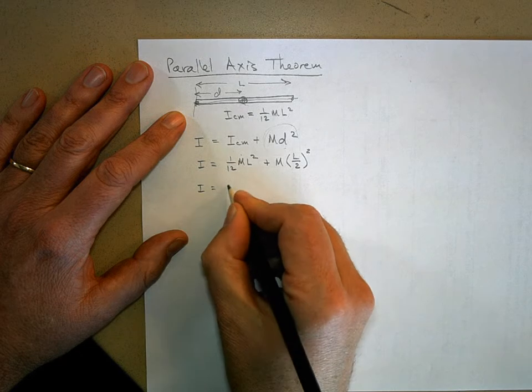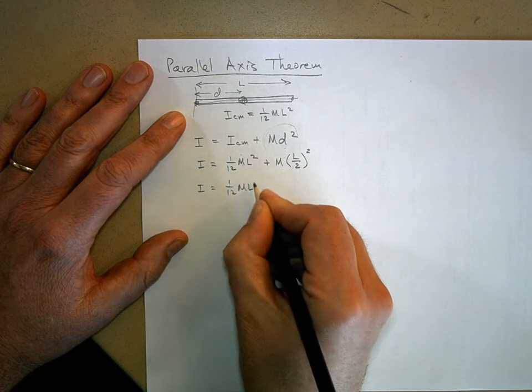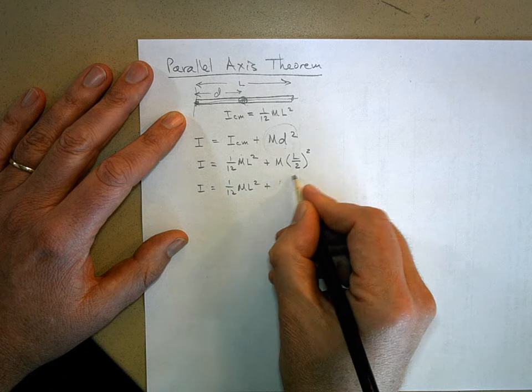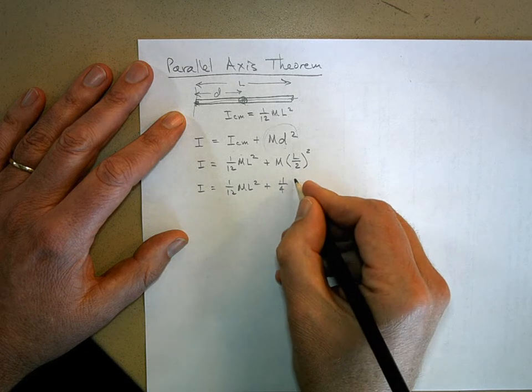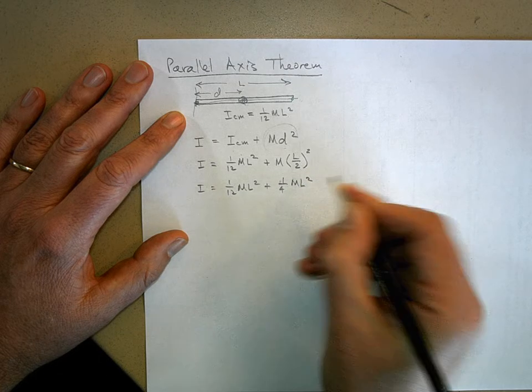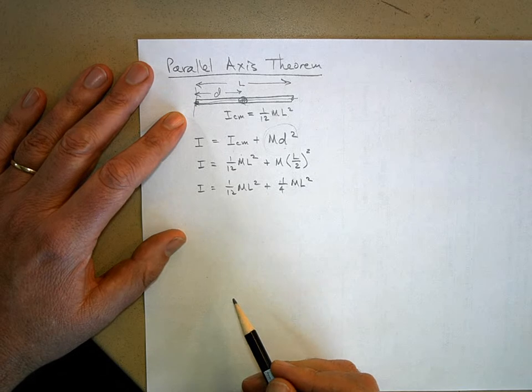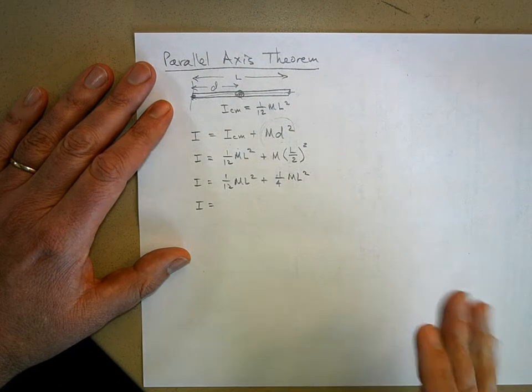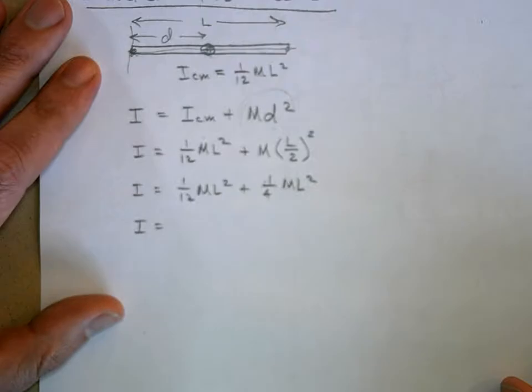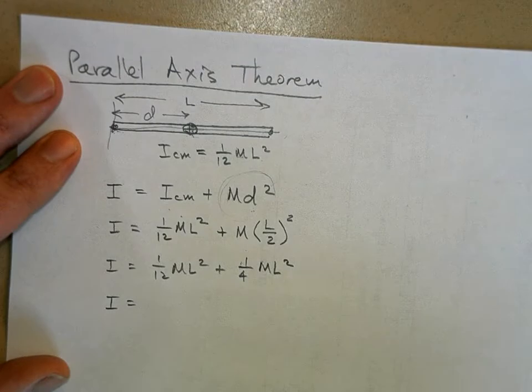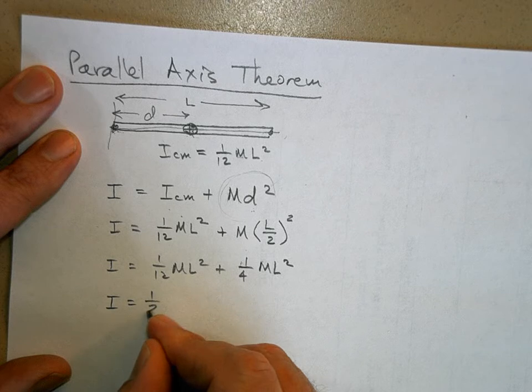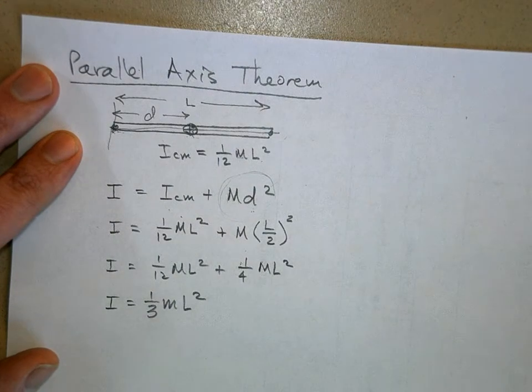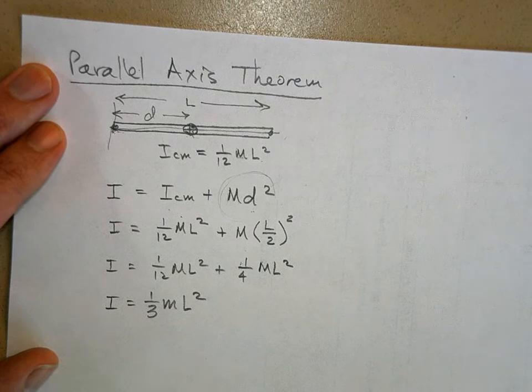And so now I just need to add these two together. I've got 1/12 ML squared plus, this is going to be 1/4 ML squared. And if you look in your, on table 10.2, they have a long thin rod with the rotational axis through the end, one-third ML squared.